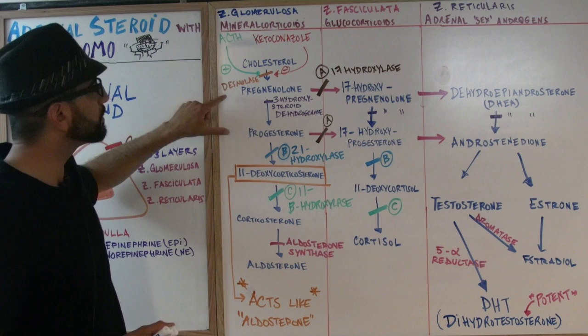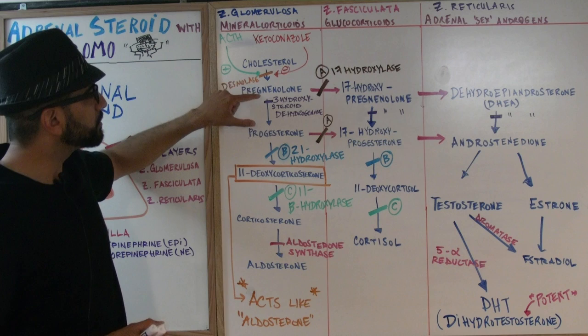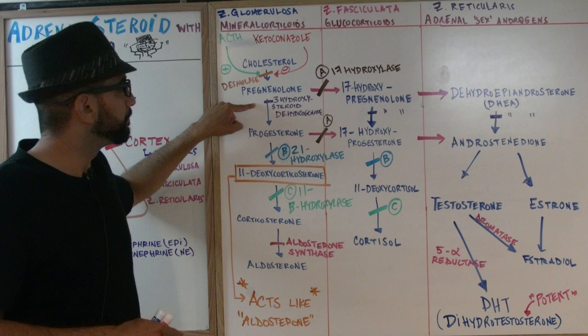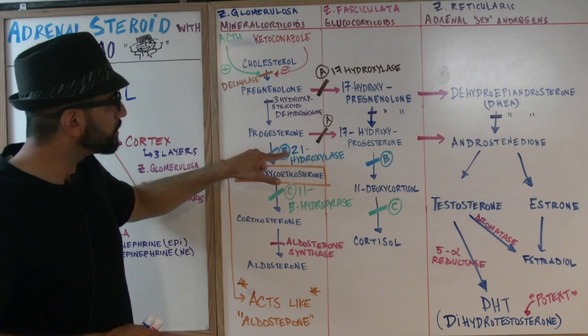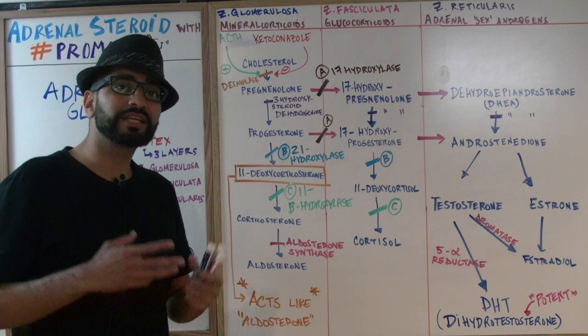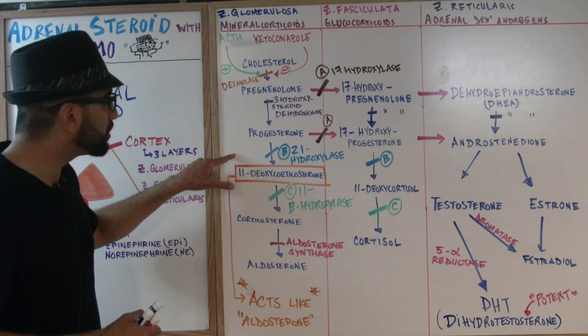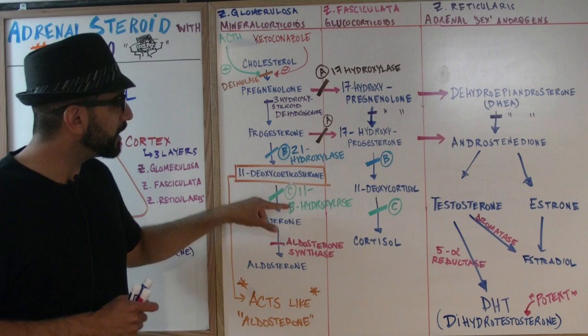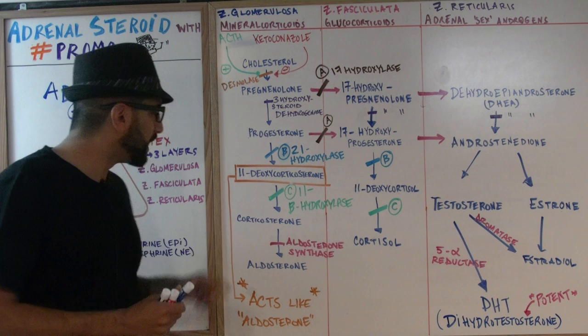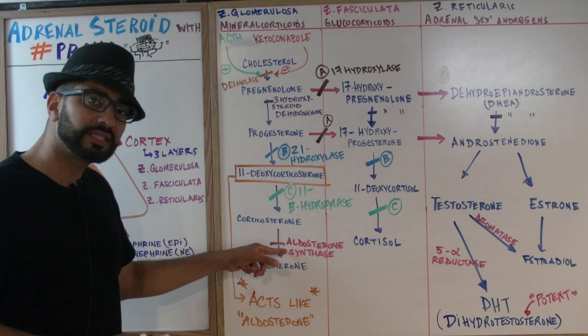Once we have pregnenolone, it's converted into progesterone through 3-hydroxysteroid dehydrogenase — an enzyme you definitely have to remember. From progesterone to 11-deoxycorticosterone, we have 21-hydroxylase. If 21-hydroxylase is deficient, we refer to that as congenital adrenal hyperplasia. 11-deoxycorticosterone then converts into corticosterone through 11-beta-hydroxylase, the second important enzyme. Finally, corticosterone gets converted to aldosterone by aldosterone synthase.